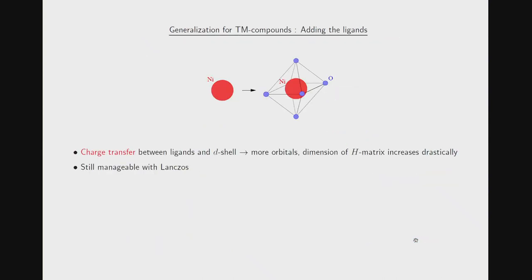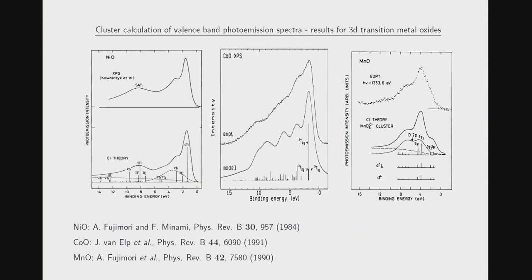Now we are not interested in nickel in vacuum but nickel in a solid. We add a cage of nearest neighbors — for nickel oxide, nickel in an octahedron of O²⁻ ions. The crucial point is that we allow for charge transfer: electrons hop from oxygen onto nickel and vice versa. This increases the Hilbert space dimension considerably, but using the Lanczos algorithm we can still calculate the electron Green's function and obtain the photoemission spectrum. Here you see angle-integrated photoemission spectra of nickel oxide, cobalt oxide, and manganese oxide compared to cluster calculations, and in all cases the agreement is very good.